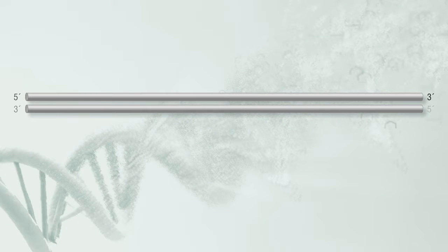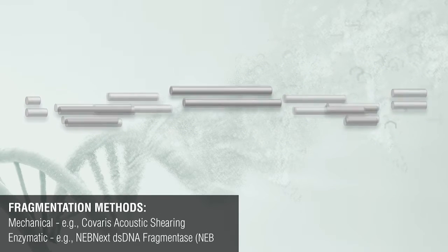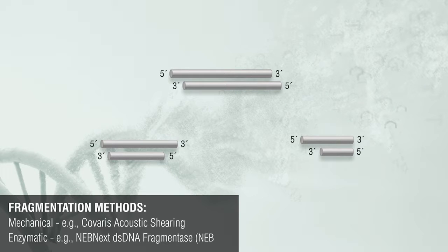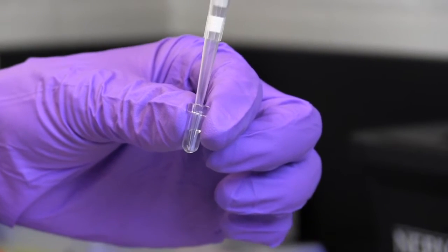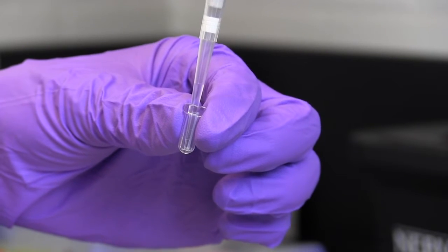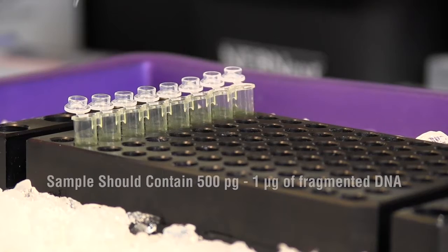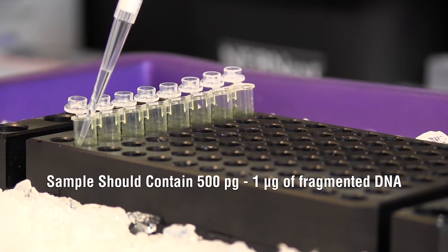Your DNA should be fragmented to the size range suitable for your sample and sequencing requirements. This can be done using either mechanical methods or enzymatic methods. The volume of your sample should be adjusted to 50 microliters and this should contain 500 picograms to 1 microgram of fragmented DNA.